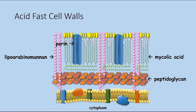Within this cell wall there are also porins, which have similar functions to those found in gram-negative cell walls. They also have acyl lipids, which contribute to the overall protection against the penetration of harmful chemicals.